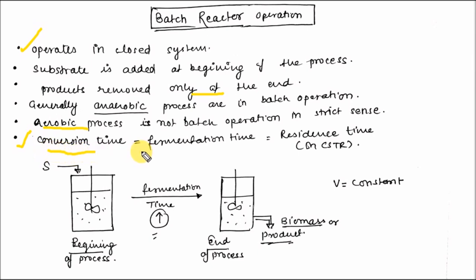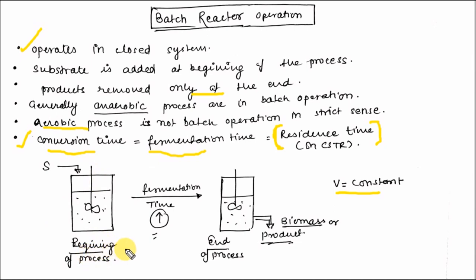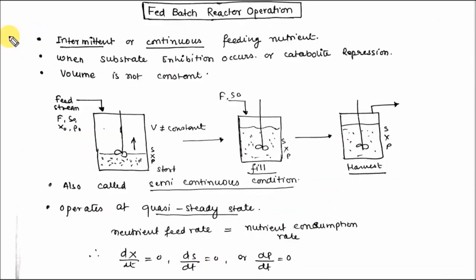Batch reactor operation is mainly dependent upon conversion time — the time required to convert substrate into product. Conversion time is also known as fermentation time or residence time in the CSTR or chemostat. In batch reactor operation, volume is constant. At the end of the fermentation or conversion time, you remove the biomass or product.